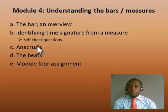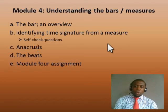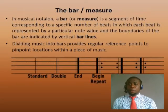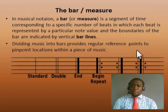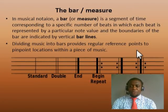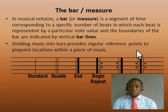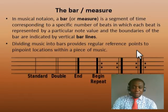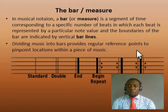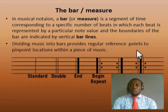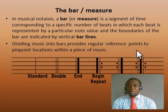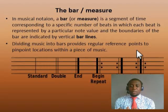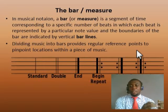The bar, also known as a measure, is a segment of time corresponding to a specific number of beats, where every beat is represented by a particular note value and divided according to equal boundaries. To simplify: every piece of music has a time signature, and in that time signature we have what we call beats. These beats are divided into equal measures. In a particular measure — also known as a bar — we might have four beats, then the next bar also has four beats, and so on.